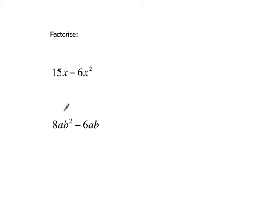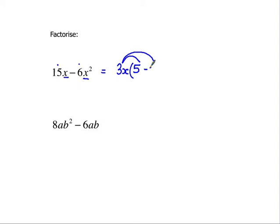Final couple. Again, both of these are going to have more than one thing to take outside the brackets. There's a number that goes into 15 and 6, which is 3, and there's an x in both. So I'm going to take 3x outside the brackets. 3x lots of something gives me 15x — 3 times 5 is 15, so 3x times 5 gives me 15x. Then 3x times something gives me minus 6x squared — 3 times something to give minus 6 must be minus 2, and x times x gives the x squared. I can expand that to check, just like all the others.